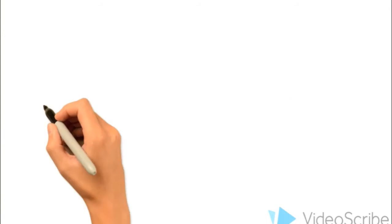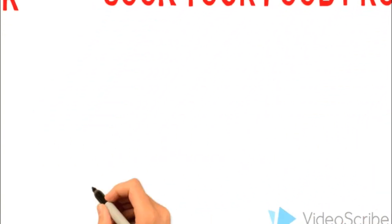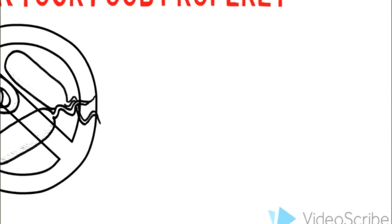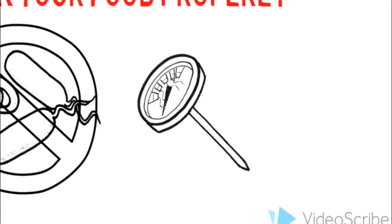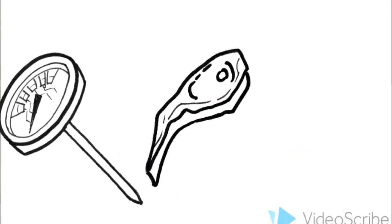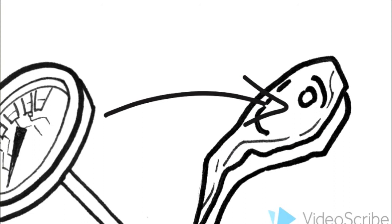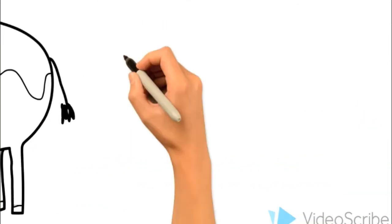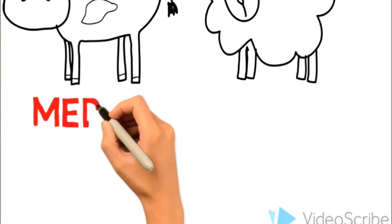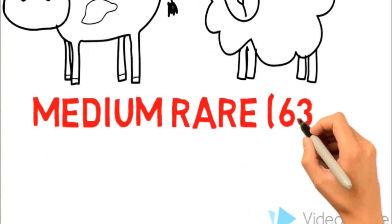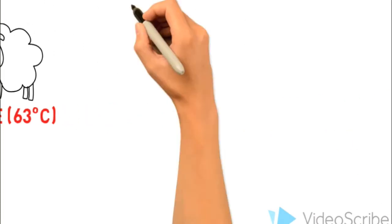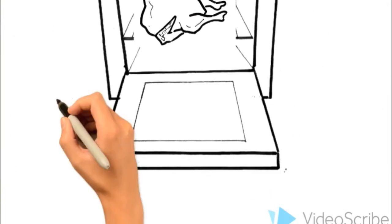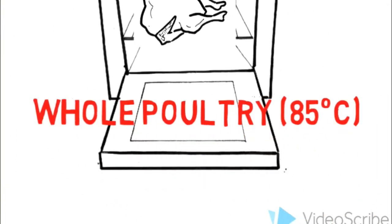Cooking your food properly is one of the best ways to make sure that it's safe to eat. Many bacteria are killed by heat. Using a meat thermometer is one of the best ways to ensure that your food is cooked to a safe temperature. Always stick your thermometer in the thickest part of the meat. For cuts of beef, veal, and lamb, your meat should be at least 63 degrees Celsius or 145 degrees Fahrenheit for medium rare. For whole birds like chicken, turkey, and duck, 85 degrees Celsius or 185 degrees Fahrenheit is a safe temperature.